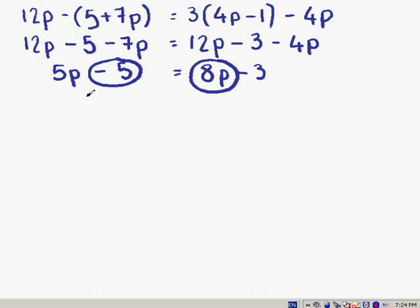So first of all, writing down the things that are staying where they are. 5p is staying where it is, and minus 3 is staying on this side. Minus 5, if we change side, it becomes plus 5. And 8p, it doesn't appear to have a sign, so we know it's positive. Change side, it becomes minus 8p.